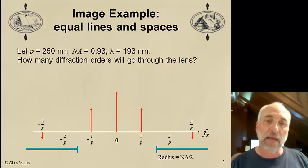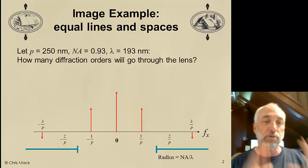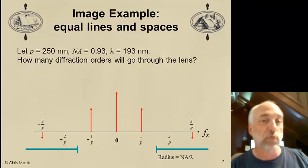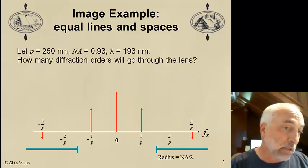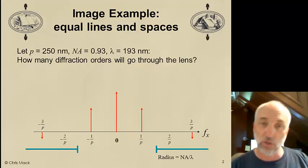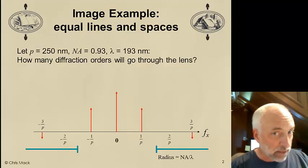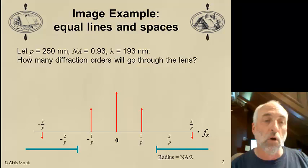Then, this diffraction pattern of discrete points of light, discrete diffraction orders, will be transmitted through a lens. And the lens has a certain radius. The radius in spatial frequency terms is NA over lambda. So, I'll pick a lens with an NA of 0.93. This is about the highest numerical aperture that we can get without going to immersion lithography. And we'll have the wavelength be the lowest wavelength that we have available today in manufacturing, 193 nanometers.